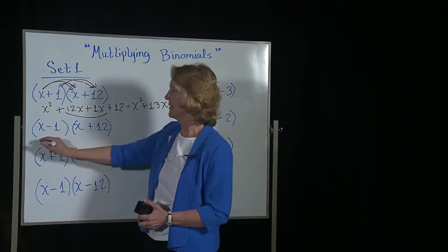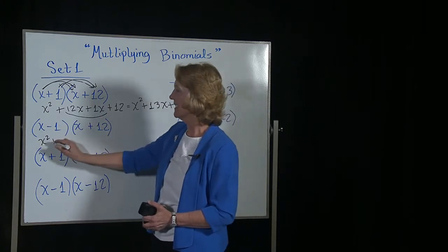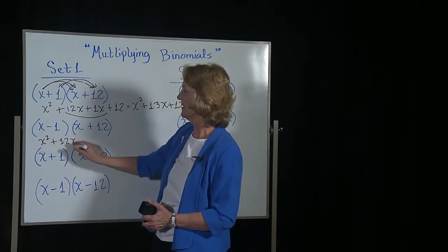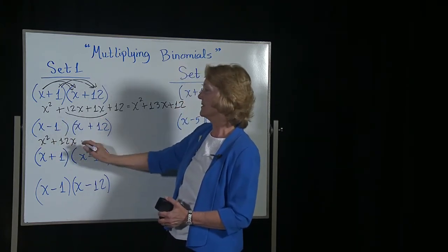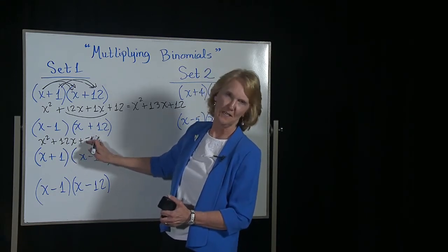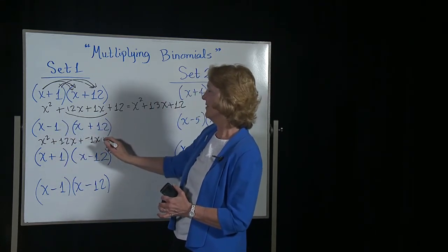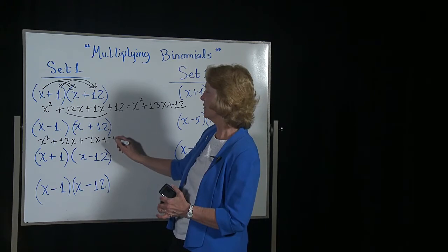First times first gets you x squared. First times last gets you 12x again. Negative 1 times x will be a negative 1x. Negative 1 times 12 is a negative 12.